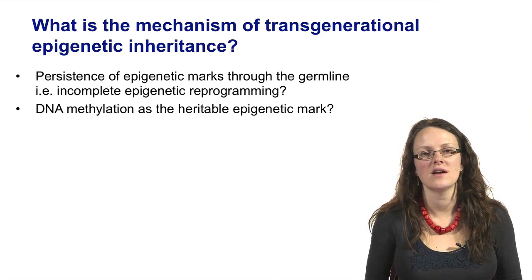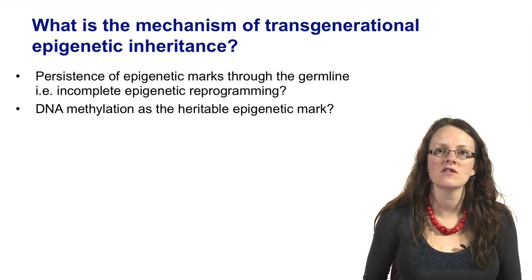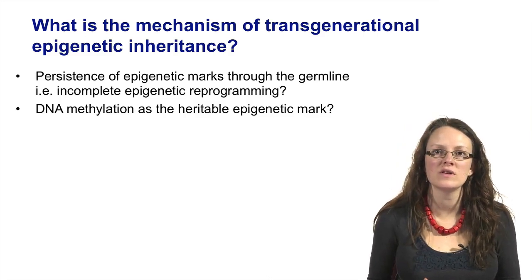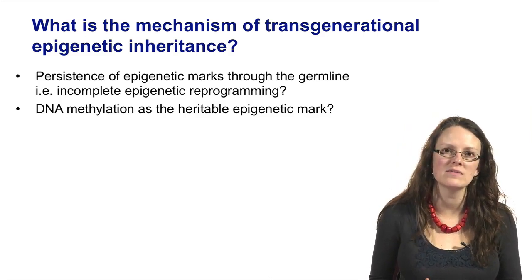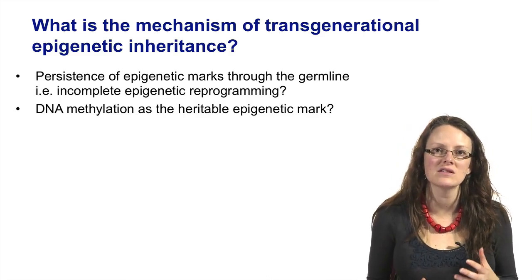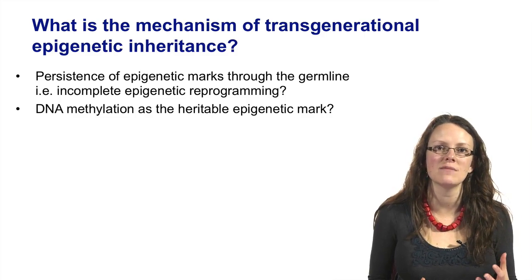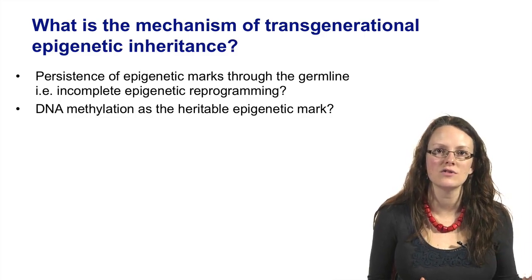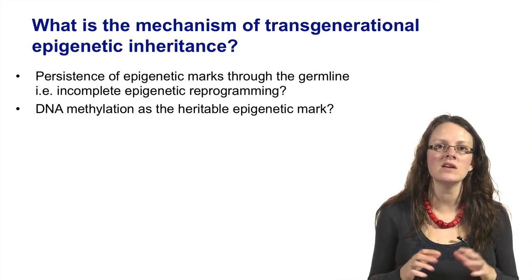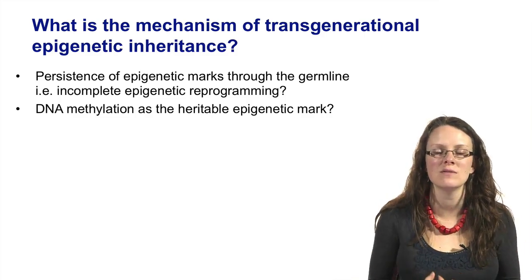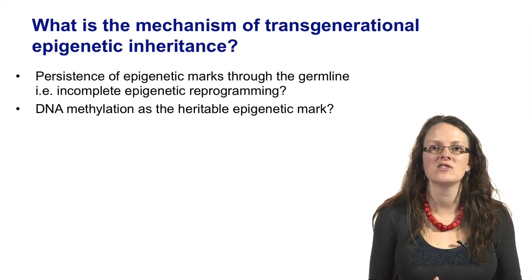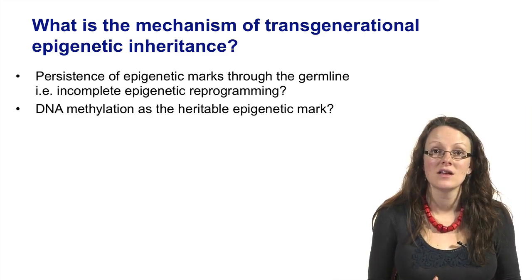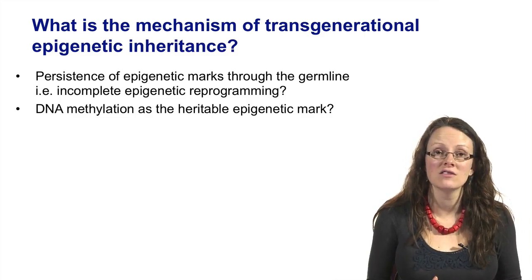The first theory, and probably the one that's been around for the longest time, is that there would be some persistence of the epigenetic mark through the germline. In other words, there would be incomplete erasure or incomplete clearing of the epigenetic marks that were present in the parents.